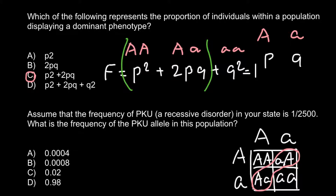Second question: assume that the frequency of PKU — a recessive genetic disorder — in your state is one out of 2500 people. What is the frequency of the PKU allele in this population? We can solve this easily using the Hardy-Weinberg formula.